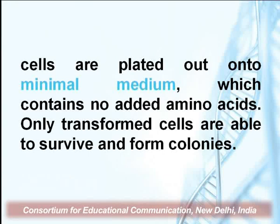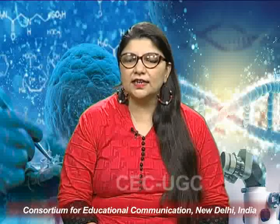The cells are plated out onto minimal medium which contains no added amino acid, and only transformed cells are able to survive and form colonies. For yeast episomal plasmids, leucine-2 or the auxotrophic-to-prototrophic conversion becomes the selection criterion for transformed colonies.